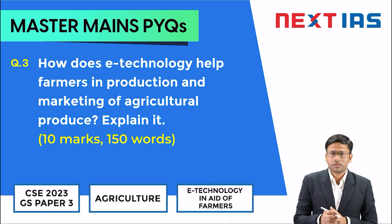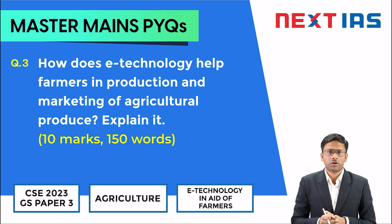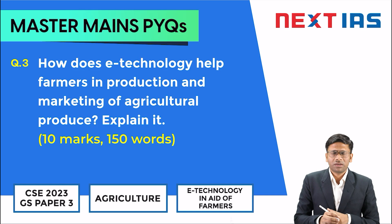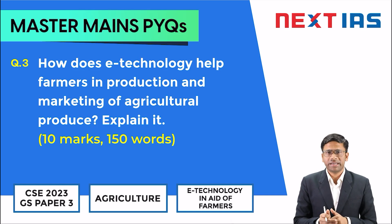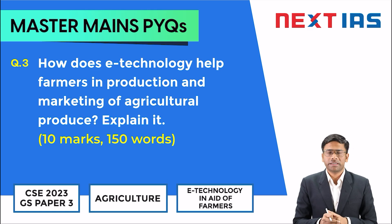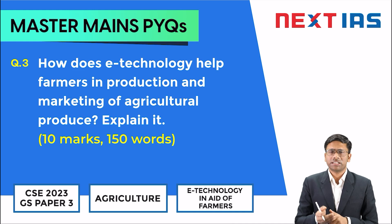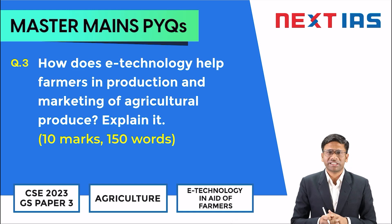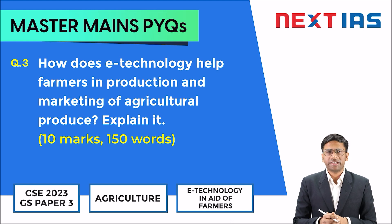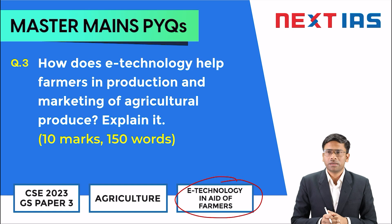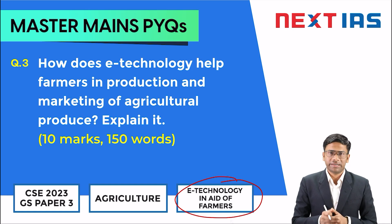If we see the broad themes covered in agriculture, we can see that cropping pattern, crop diversification, direct and indirect subsidies, minimum support price, irrigation, agricultural marketing, and food processing — all these are themes on which questions are asked every year. Today's question also comes directly from one particular phrase in the syllabus: e-technology in aid of farmers. The question is: how does e-technology help farmers in production and marketing?